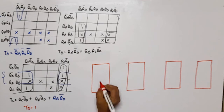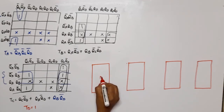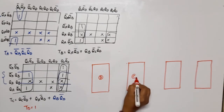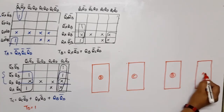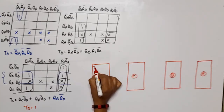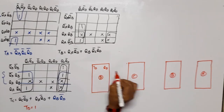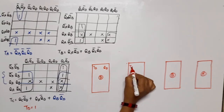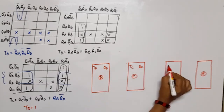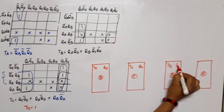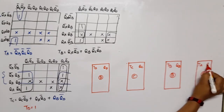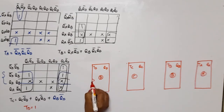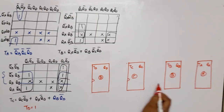We use 4 T flip-flops. The LSB is D, followed by C, B, and A. The inputs are TD, QD, TC, QC, TB, QB, TA, QA. Since this is a synchronous counter, the clock signal is the same for all flip-flops.